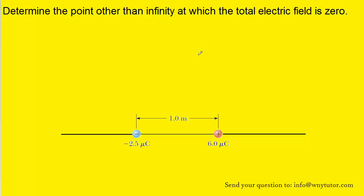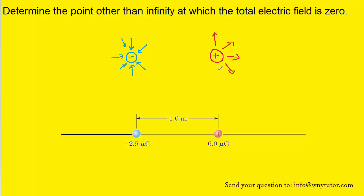Before we attempt to solve this question, we need to remind ourselves of a couple of basic facts about point charges and electric fields. Negative charges produce electric field lines that point towards the negative charge, so we can draw a series of electric field lines pointing inward. Positive charges, on the other hand, produce electric field lines that point away from the positive charge.